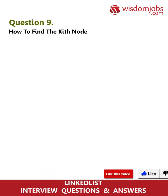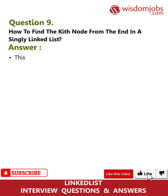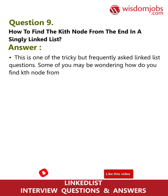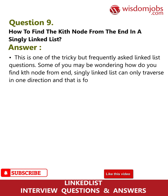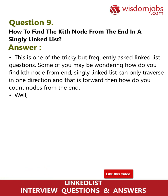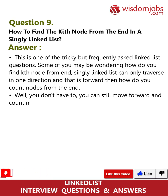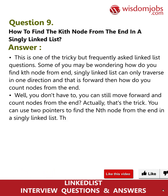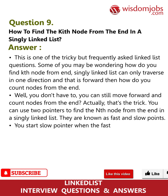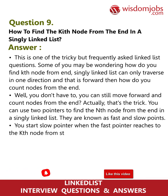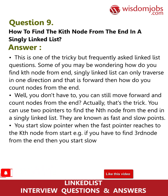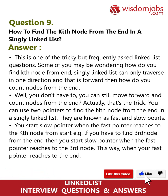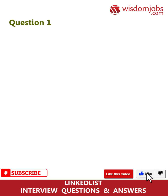Question 9: How to find the kth node from the end in a singly linked list? Since a singly linked list can only be traversed forward, you can use two pointers — fast and slow — known as the fast and slow pointer technique. Start the slow pointer when the fast pointer reaches the kth node from the start. For example, to find the third node from the end, start the slow pointer when the fast pointer is at the third node. When the fast pointer reaches the end, the slow pointer will be at the kth node from the end.